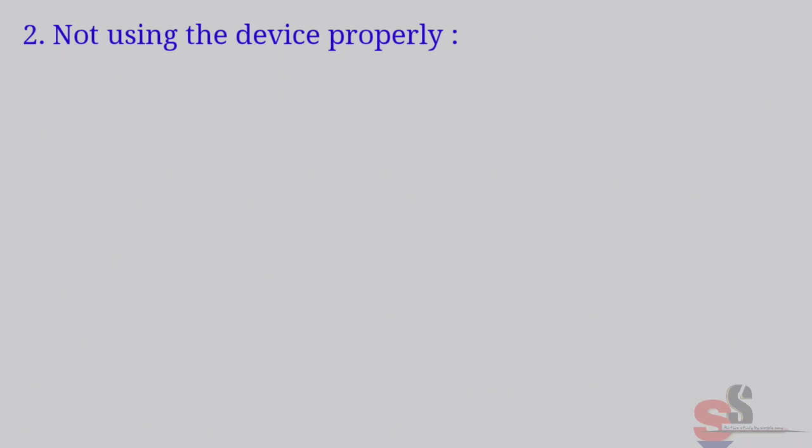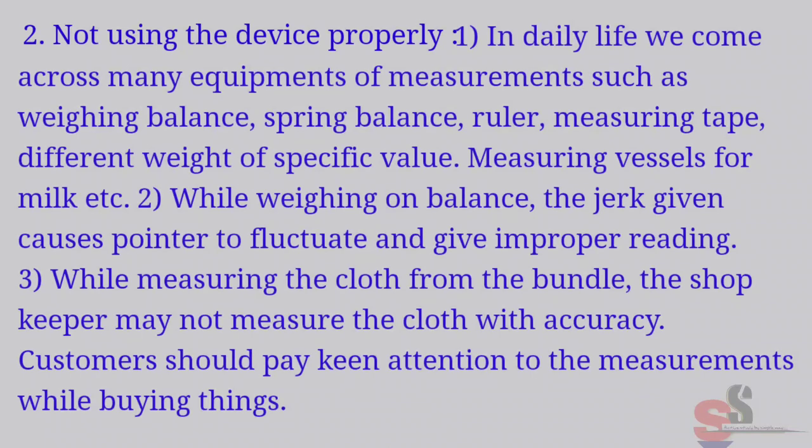Second, not using the device properly. In daily life, we come across many equipments of measurements such as weighing balance, spring balance, ruler, measuring tapes, different weights of specific value, measuring vessels for milk, etc. While weighing on balance, the jerk given causes pointer to fluctuate and gives improper reading. While measuring the cloth from the bundle, the shopkeeper may not measure the cloth with accuracy. Customers should pay keen attention to the measurements while buying things.